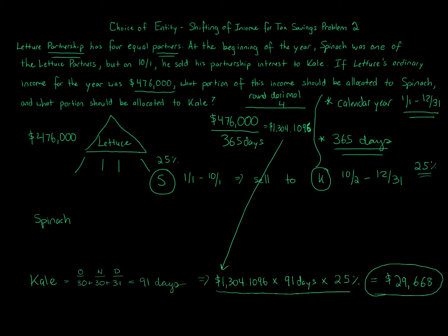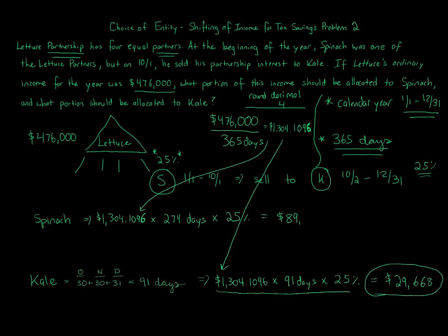For Spinach's days, rather than counting January 1st through October 1st manually, we simply subtract: 365 − 91 = 274 days. Spinach's allocation is $1,304.1096 × 274 days × 25%, which equals $89,332 — rounded to the nearest dollar. That is Spinach's allocated share of the partnership income.